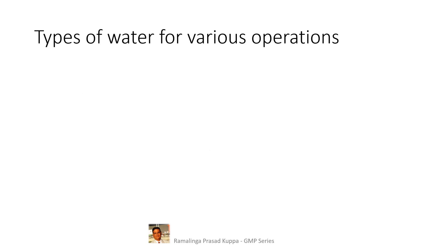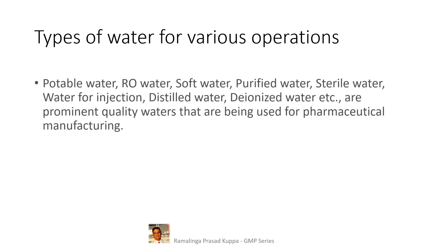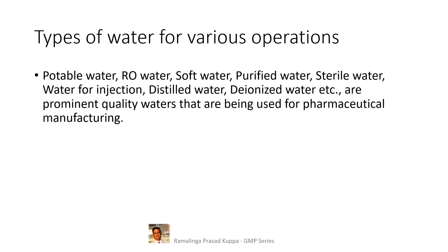Let us see the types of water for various operations. Potable water, RO water, soft water, purified water, sterile water, water for injection, distilled water, deionized water, etc., are prominent quality waters being used for pharmaceutical manufacturing.